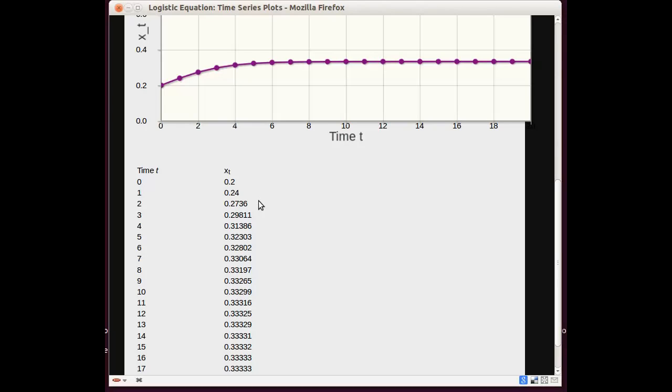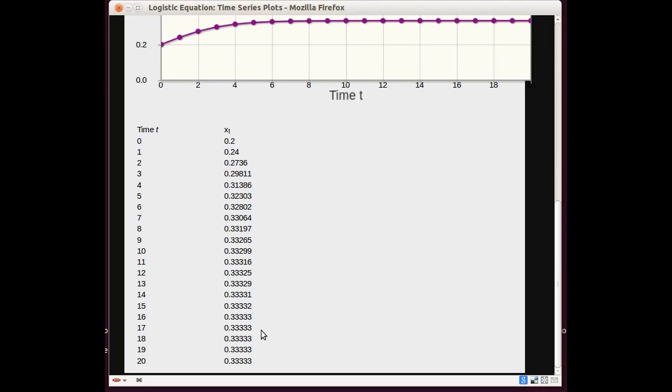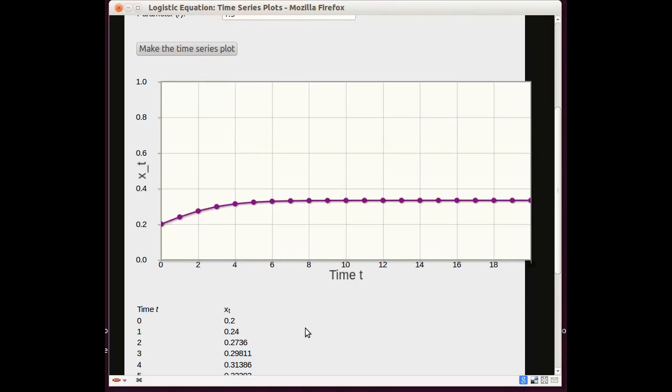We can see that the orbits are growing and then they reach a fixed point at 0.33333, or a third. So we suspect this is an attracting fixed point. And the time series plot shows the orbit starting at 0.2 and growing to a third.